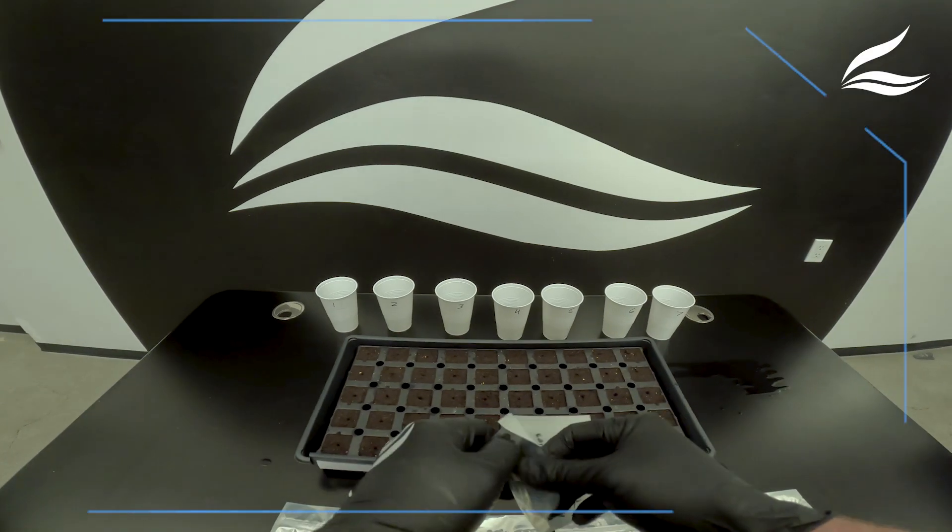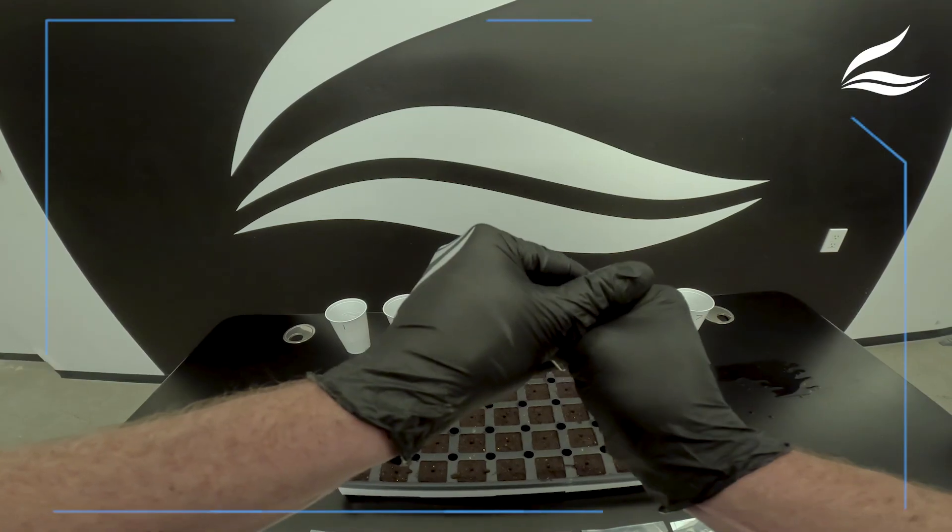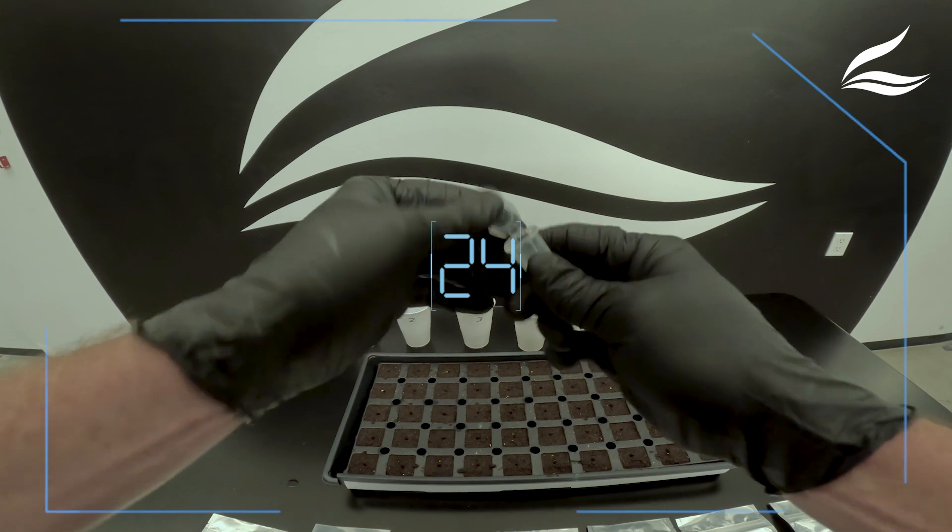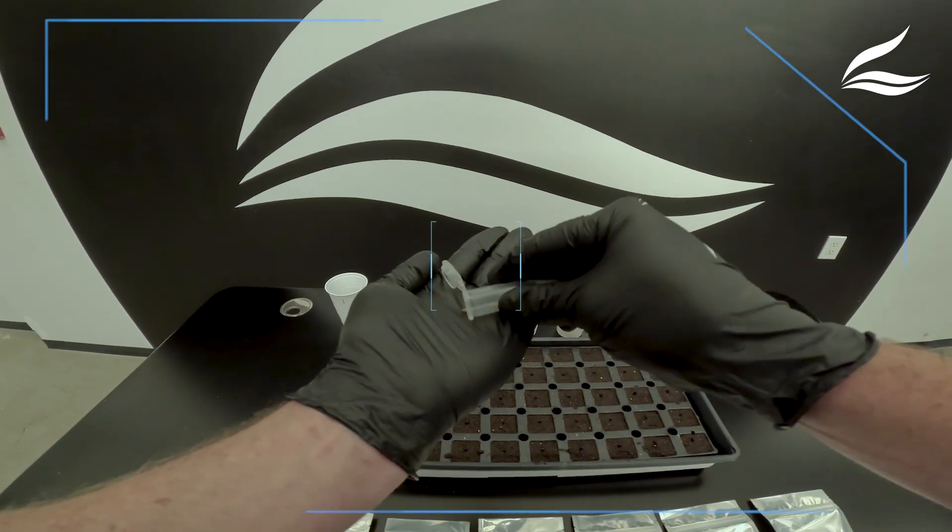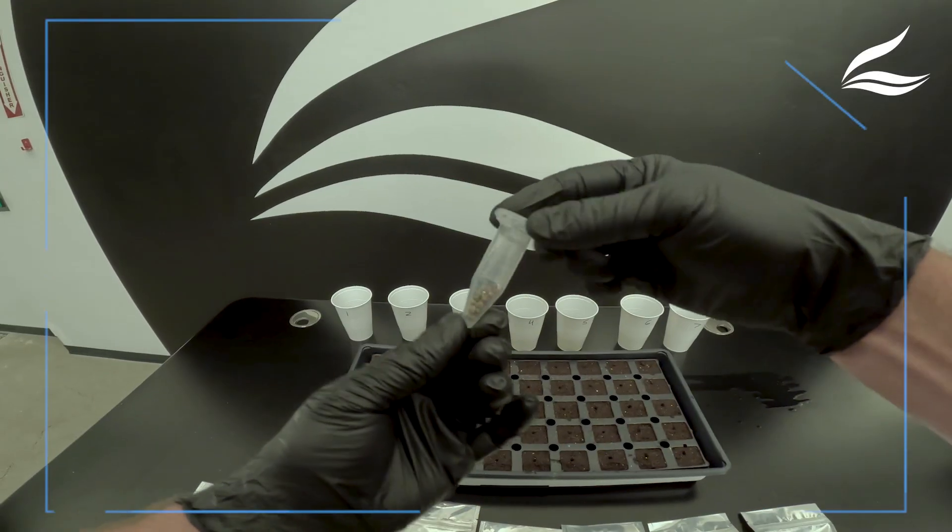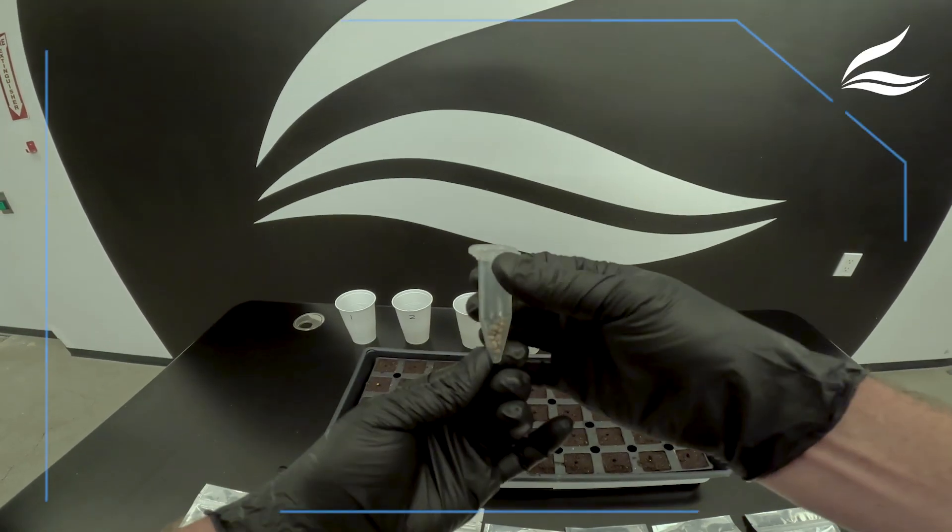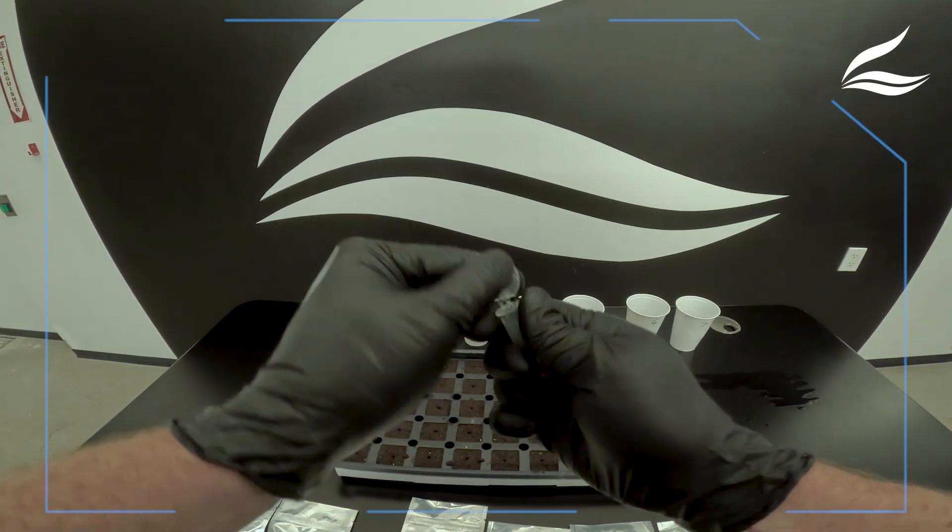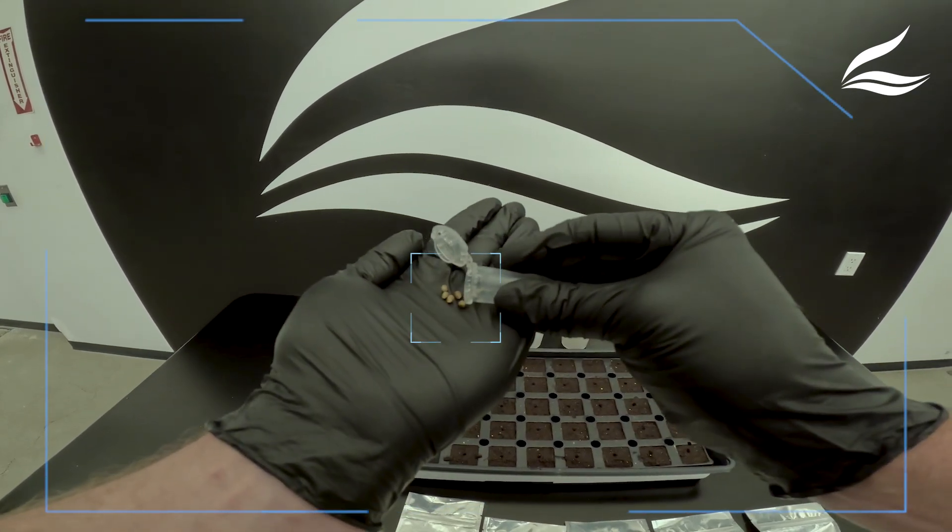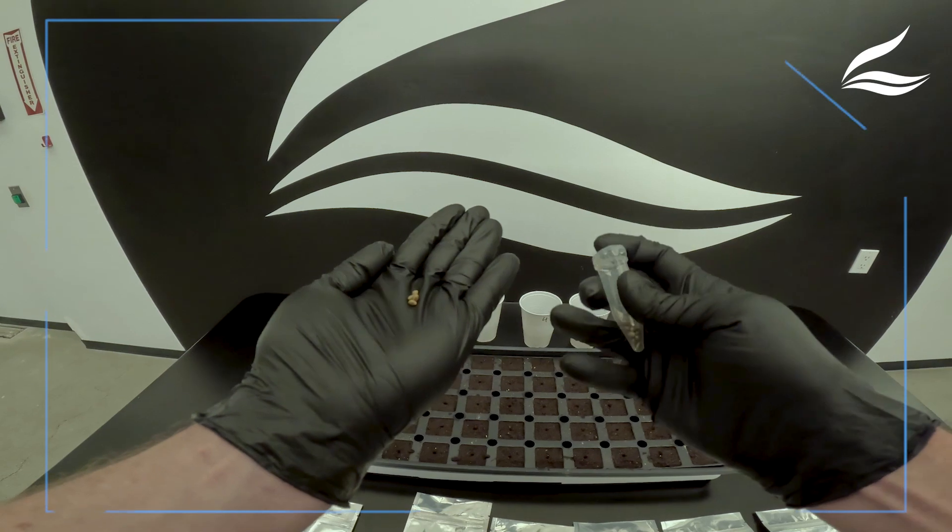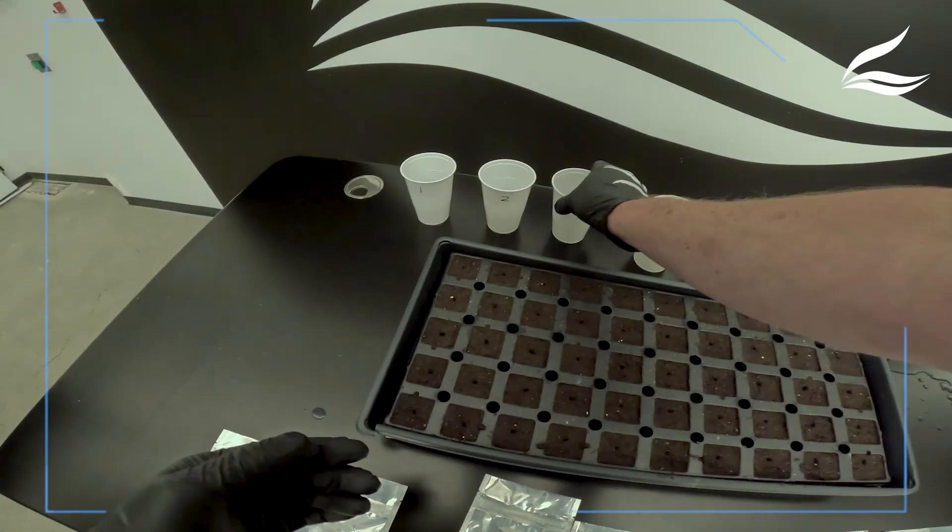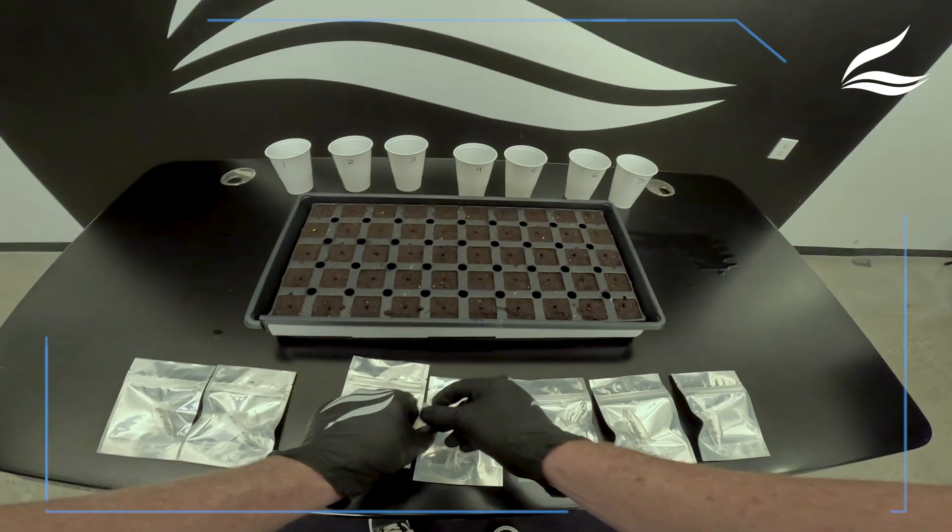First thing we've got to do is take the seeds out of the pack, and then we're going to be soaking these seeds for 24 hours. There's our seeds. Nice airtight container keeping them fresh. It's always important to store your seeds properly or they will go bad. Dump them right in. Let these soak for 24 hours.